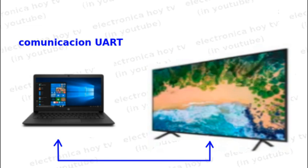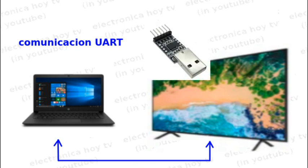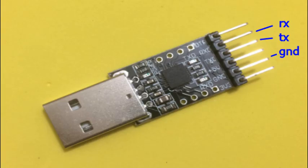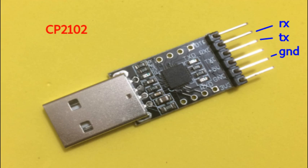Para establecer la comunicación entre un televisor de la nueva generación y una computadora personal, es necesaria la utilización de un dispositivo de interfase serial que reconozca el protocolo UART y pueda enviar o recibir la información del televisor a la computadora en un formato TTL y a través del puerto USB. Este dispositivo debe contar con las entradas seriales RX y TX más una conexión a tierra entre el televisor y el computador. Uno de los dispositivos apropiados para este tipo de comunicación es el sencillo CP2102, que solo tiene un costo de aproximadamente 3 dólares.